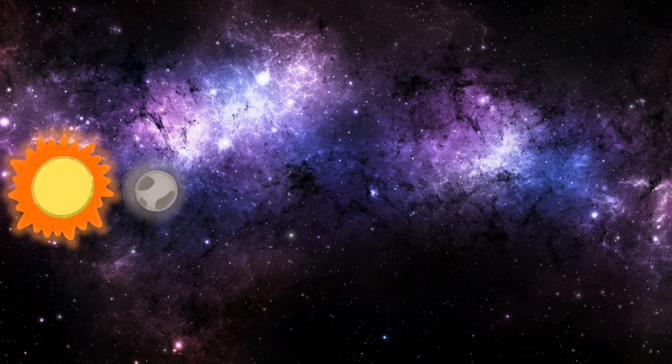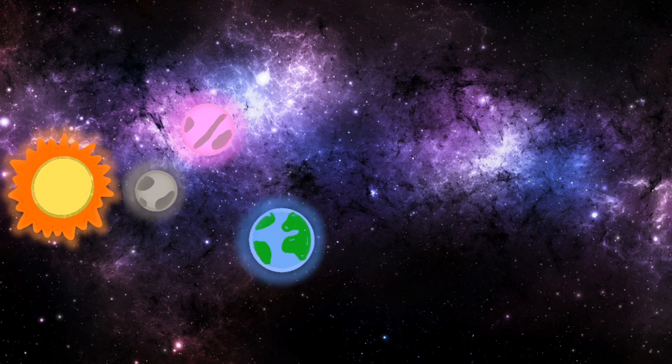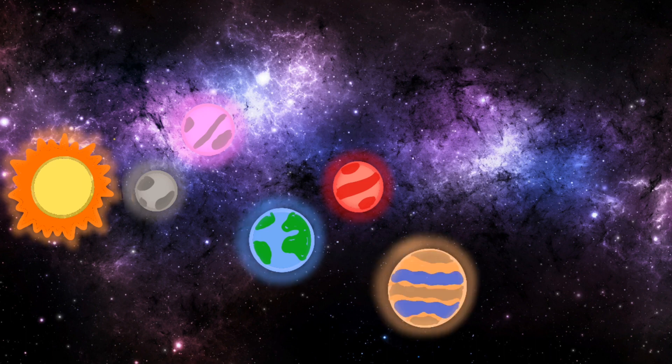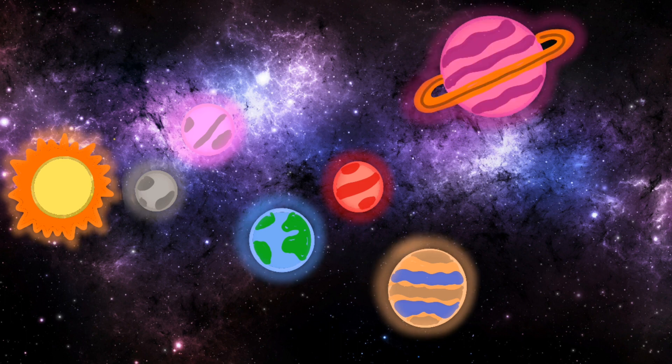The solar system consists of the Sun, Mercury, Venus, Earth, Mars, Jupiter, Saturn, Uranus, and Neptune.